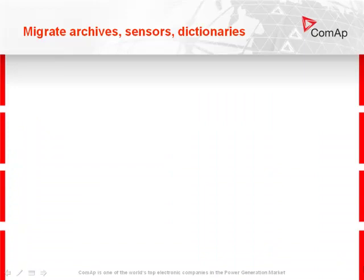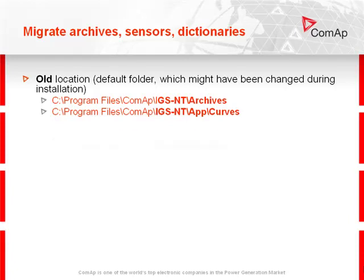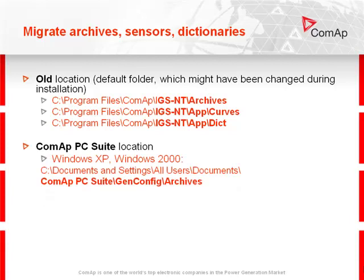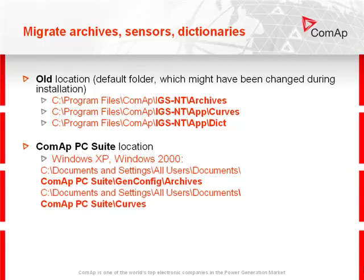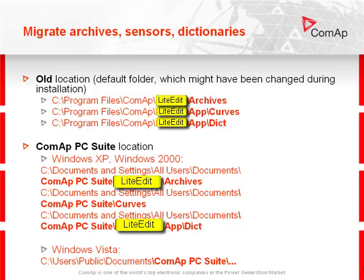When you migrate your archives, sensors, and dictionaries, there is the old location — the default folder, which might have been changed during installation. For archives, curves, and dictionaries, in COMAP PC Suite there is a new location. The old location for Windows XP and Windows 2000 covers archives, curves, and dictionaries. In Windows XP it is slightly different. If you use Lightedit, there is a slightly different location between Lightedit and GenConfig.